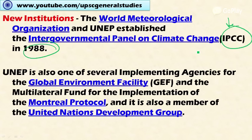UNEP is also one of the several implementing agencies for the Global Environment Facility. This is a fund which provides financial assistance to various projects related to climate change, biodiversity conservation, environmental conservation, phasing out of persistent organic pollutants in developing countries, and projects related to protection of the ozone layer.